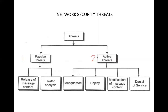Passive threats can be of two types: Release of Message Content and Traffic Analysis. As I have told you, in these two passive threats, the attacker is only aware of the content — what content is being communicated — but does not modify it. Active threats involve modification. Active threats can be categorized into four categories: Masquerade, Replay, Modification of the Message Content, and Denial of Service.